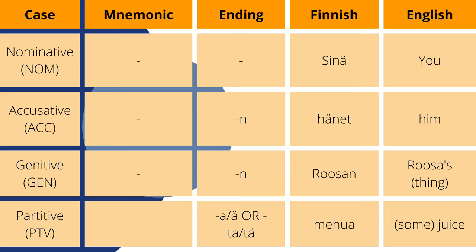Whenever a noun is in the accusative case, it'll take the ending -in. However, because the example word is a pronoun, it doesn't have this ending as you'll notice. The word hänet means 'him' as opposed to 'he.'